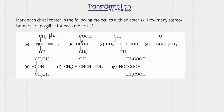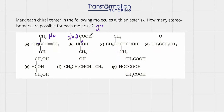How many stereoisomers are possible for each molecule? The maximum number of stereoisomers is given by the formula 2 to the N, where N is the number of chiral centers. In this case, we have one chiral center, so 2 to the 1 equals 2. Two stereoisomers are possible for molecule B.